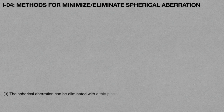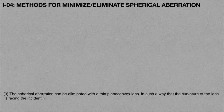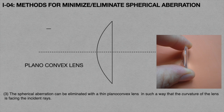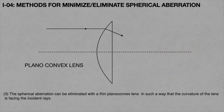The third method: spherical aberration can be eliminated using a thin plano-convex lens in such a way that the curved surface of the lens faces the incident rays. Out of all different kinds of lenses, the plano-convex lens produces the smallest deviation for the light rays and forms an image at a single point on the principal axis, resulting in less spherical aberration.